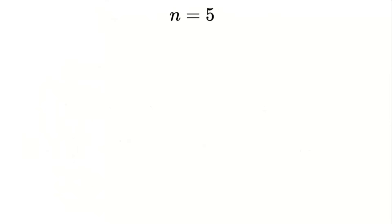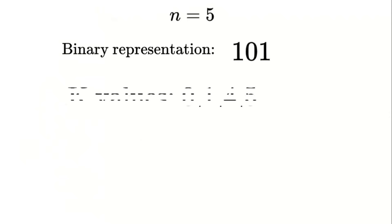Example 3 when n equals 5 the binary representation of 5 is 1 0 1. The valid k values are 0, 1, 4, and 5. So we get 1 plus j raised to the power of 5 equals V of 0 plus V of 1 plus V of 4 plus V of 5.